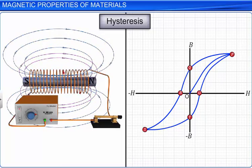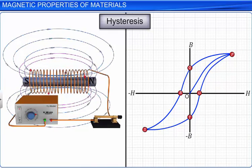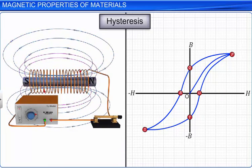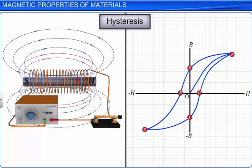We can observe that the curve OP does not retrace itself as the magnetic intensity or applied magnetic field H is reduced. Hence, we can say that for a given value of magnetic intensity H, magnetic field B depends on the previous history of the sample. This phenomenon is called hysteresis.